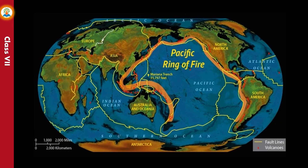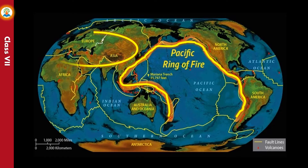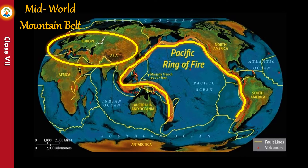Most of the active volcanoes of the world are located in a circular belt around the Pacific Ocean known as the Pacific Ring of Fire. Some volcanoes are also found in the Mediterranean Sea and the Caspian Sea region, known as the mid-world mountain belt.